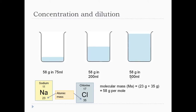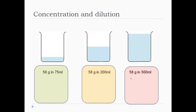From the periodic table, the atomic mass of sodium is 23 and the atomic mass of chlorine is 35, which adds up to 58 grams per mole. So the molar mass of sodium chloride is 58 grams — one mole equals 58 grams.